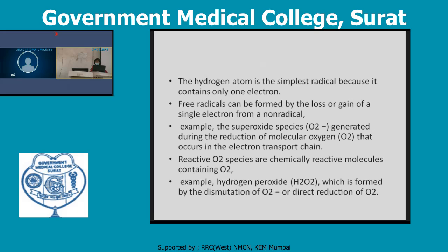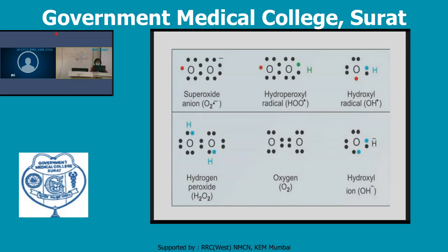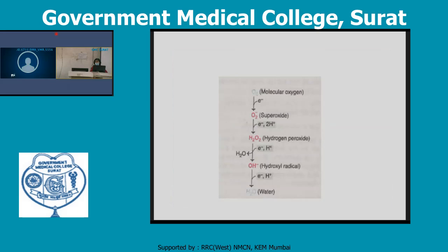For example, superoxide species is generated during the reduction of molecular oxygen that occurs in the electron transport. Reactive oxygen species is the chemically most reactive species that contains oxygen. Examples are hydrogen peroxides, formed by dismutation of oxygen or direct reduction of oxygen. The pathway goes: molecular oxygen → superoxide → hydrogen peroxide → hydroxyl ion → water.